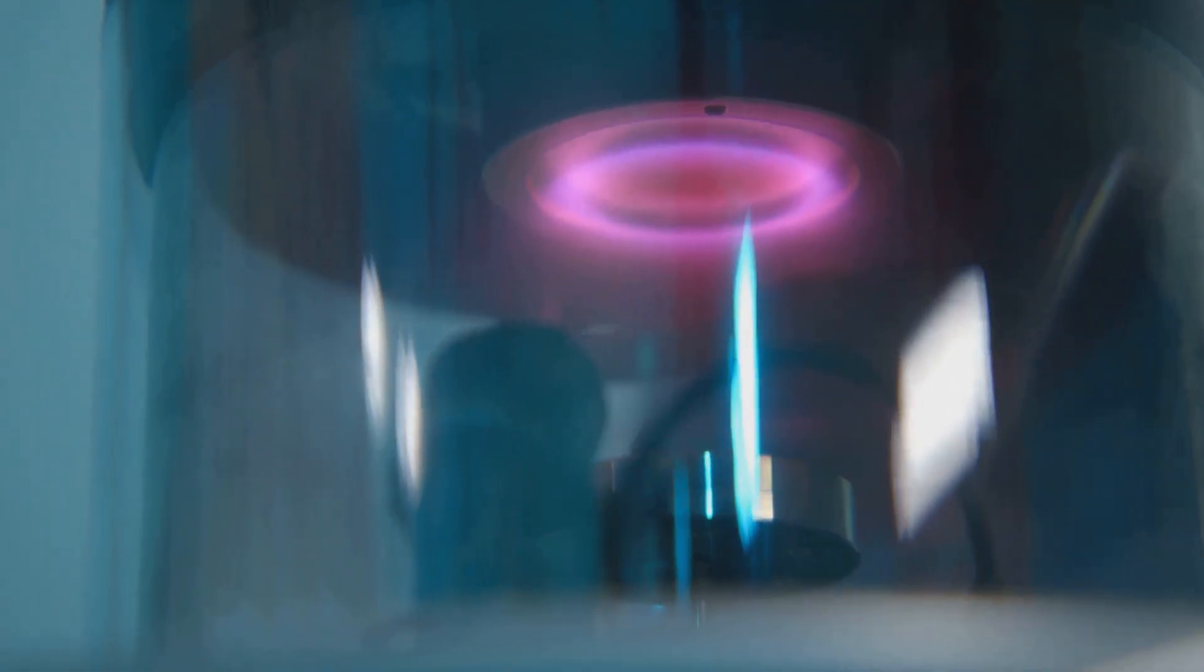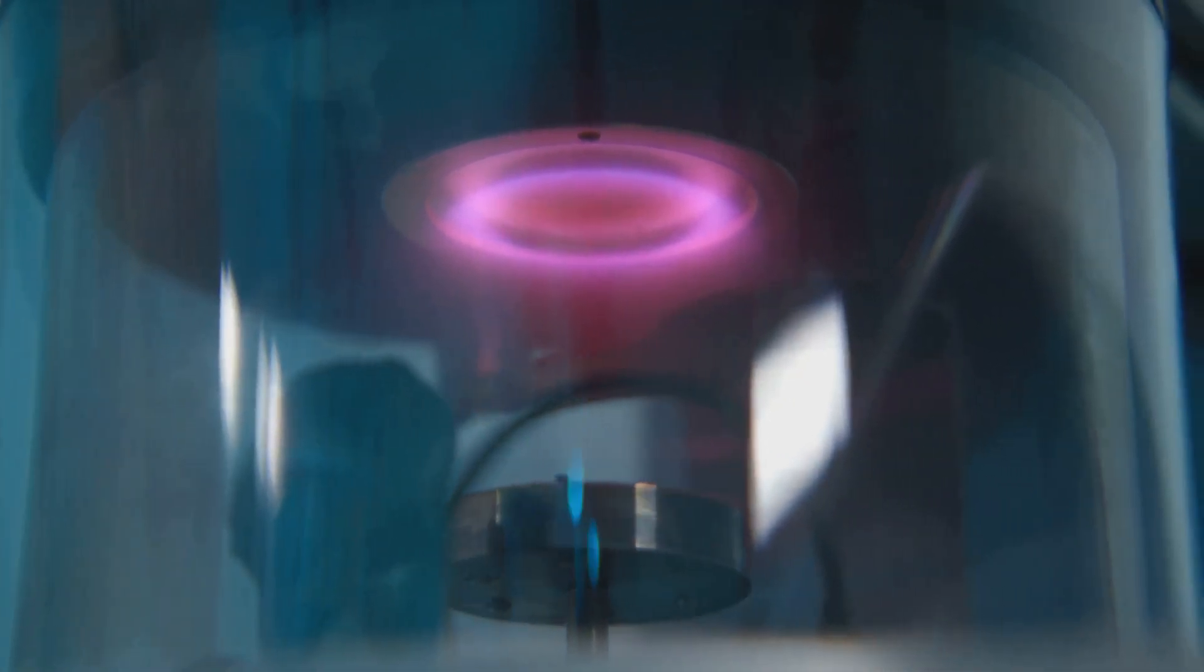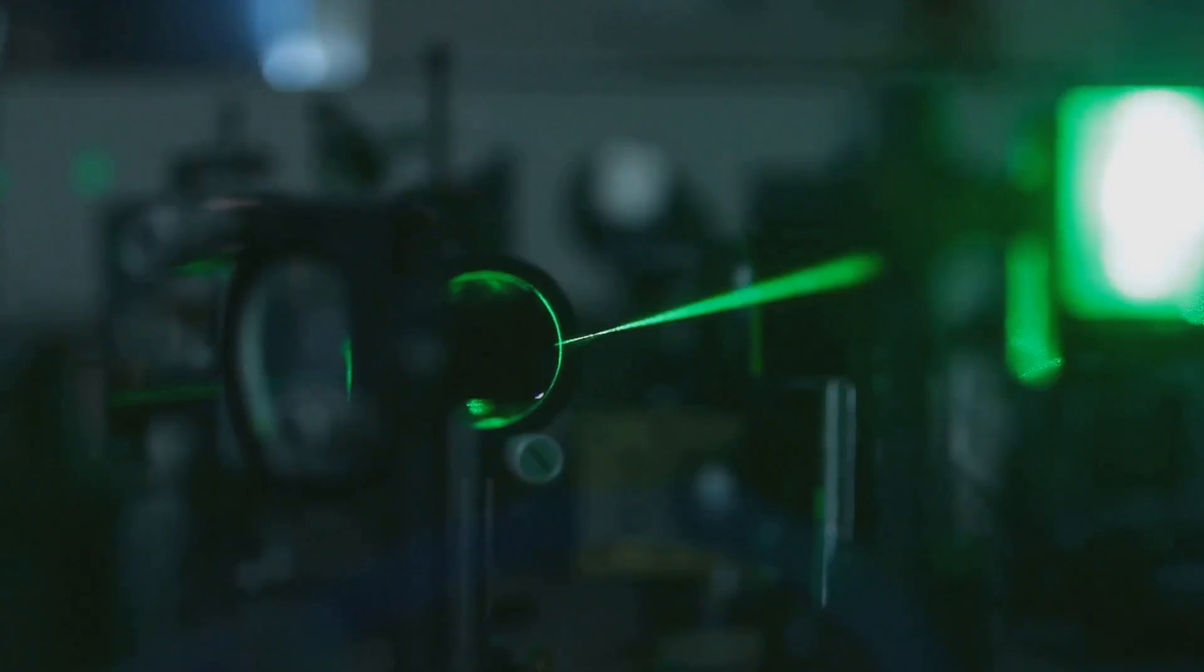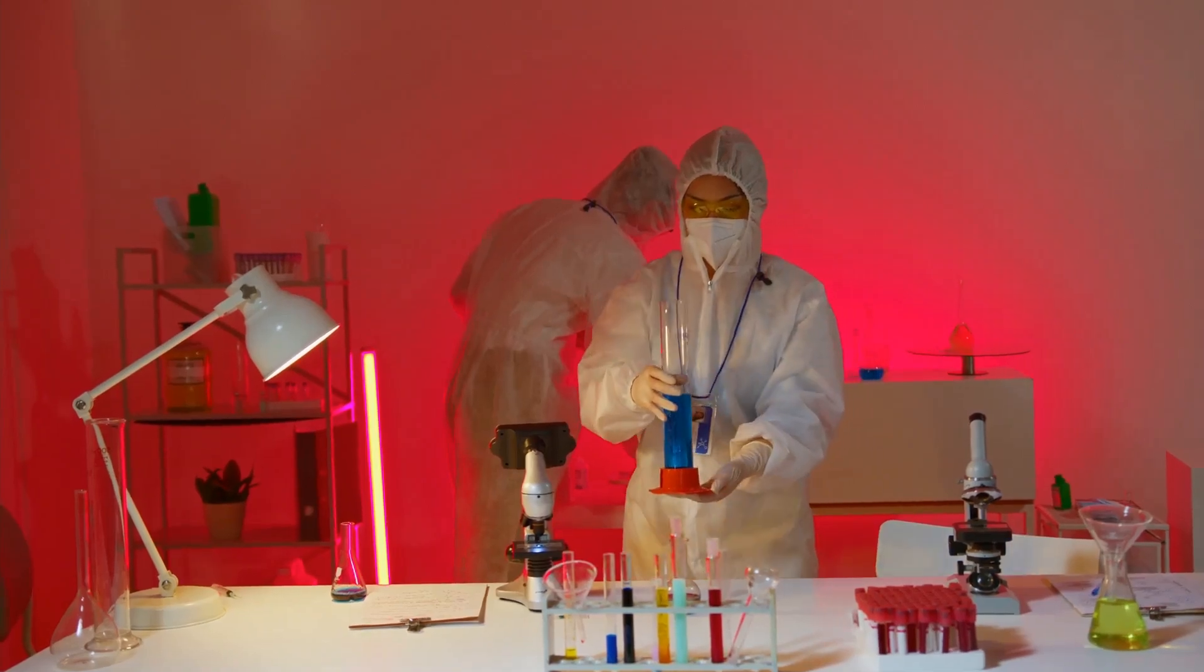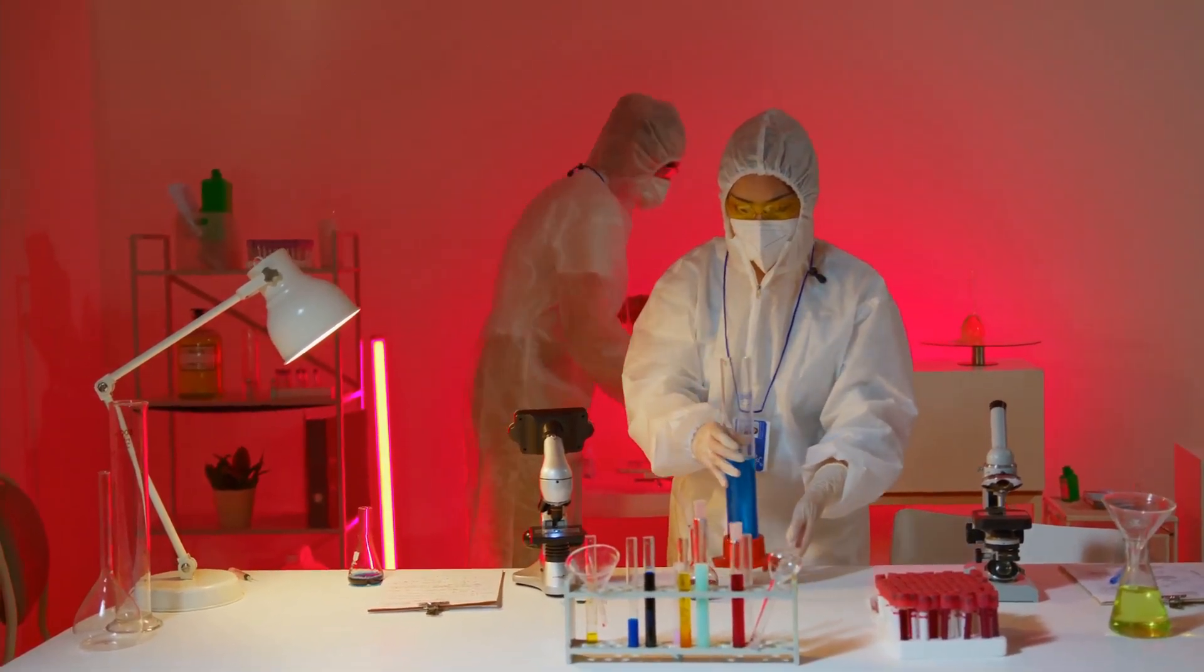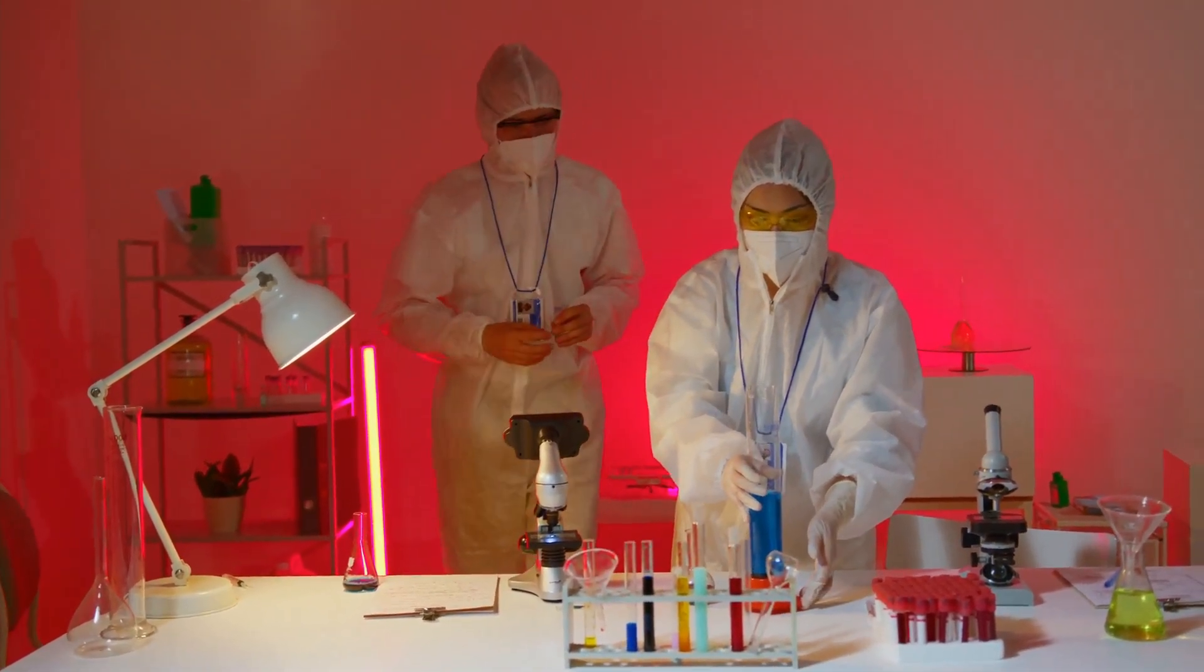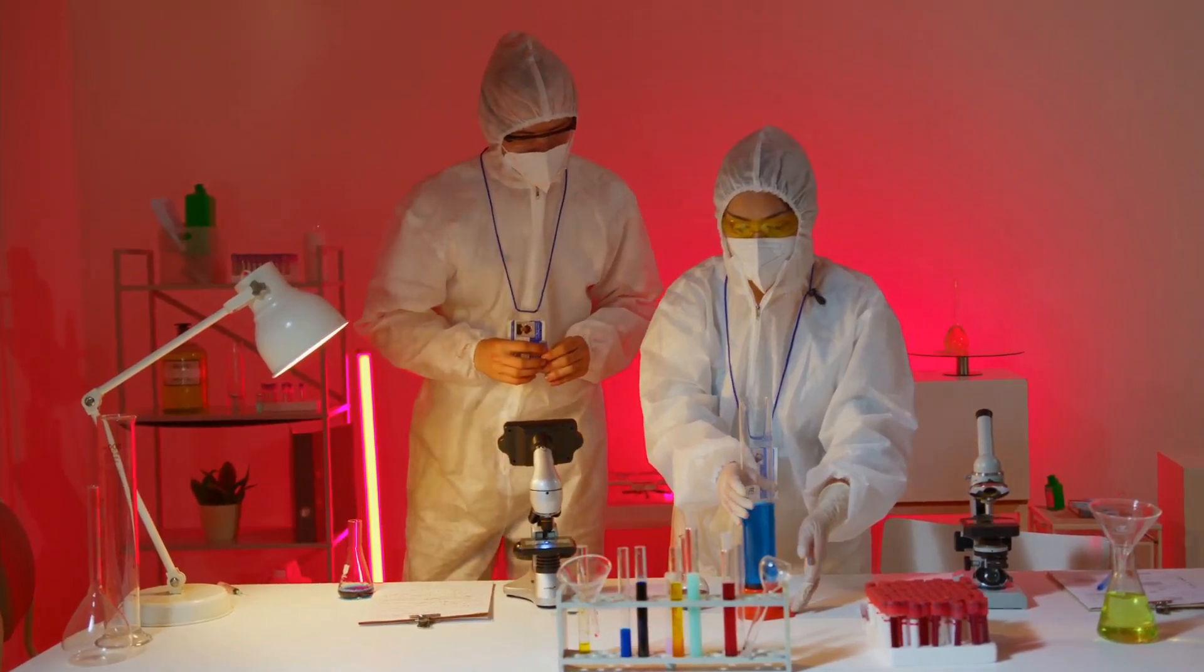The experiment used photons, tiny bits of light, and rubidium atoms in a controlled environment. The scientists used powerful lasers to energize the rubidium atoms, like giving them a significant power boost. Then, they shot photons at these powered-up atoms, and measured how long it took for the atoms to calm down and release the energy they had absorbed.